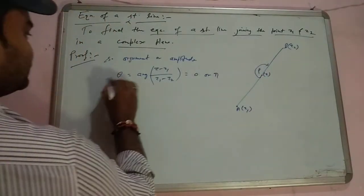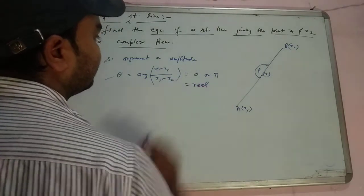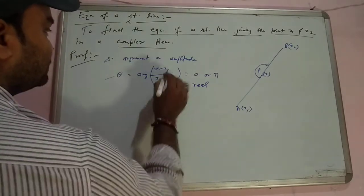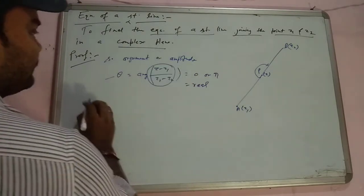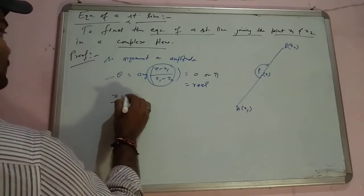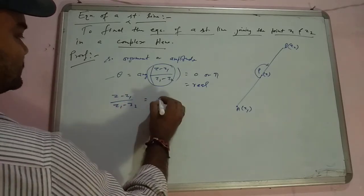So theta is going to be 0 and this is real. This means the quantity is real, this means z minus z1 upon z1 minus z2 is real.